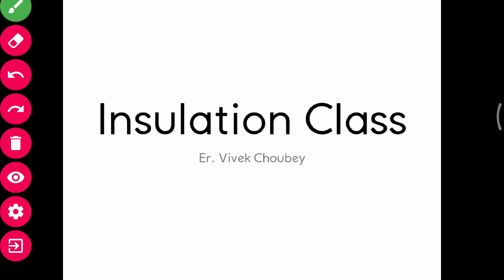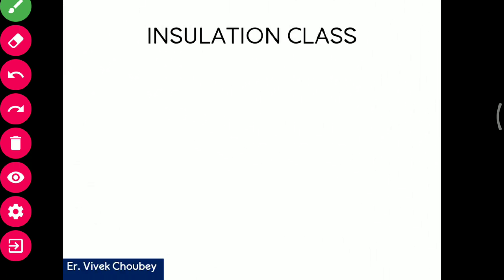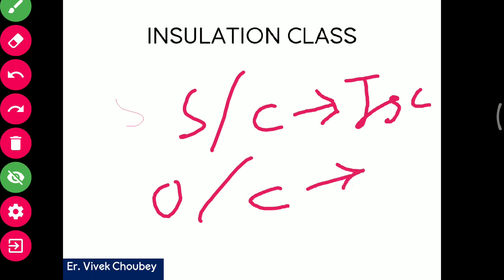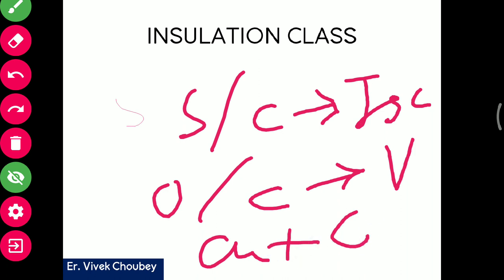Depending on the maximum allowable rise of temperature, there are different insulation classes. To understand how we determine this, consider that we run a short circuit test and an open circuit test. For a transformer, in the short circuit test we measure the short circuit current, and in the open circuit test we see the open circuit voltage. With the help of these two tests, we find the copper loss and the core loss.